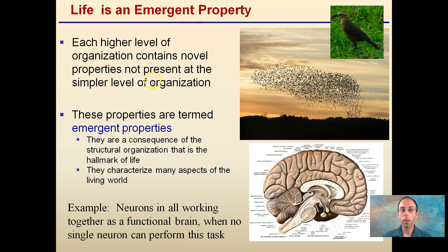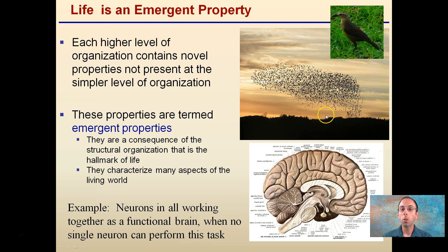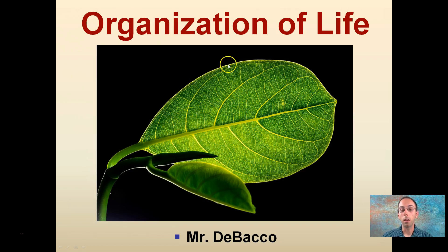So what does this look like? We have a picture of the brain here. A single neuron cannot perform the function that the brain does, just like a single bird cannot perform the function of the entire flock. When neurons are all working together as a functional brain, that is where you have that emergent property — no single neuron can perform this task. No single bird can perform the task of the flock, but a collection all working together is an example of an emergent property, which gets back to the organization of life.